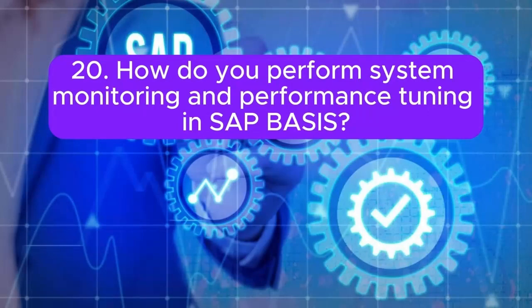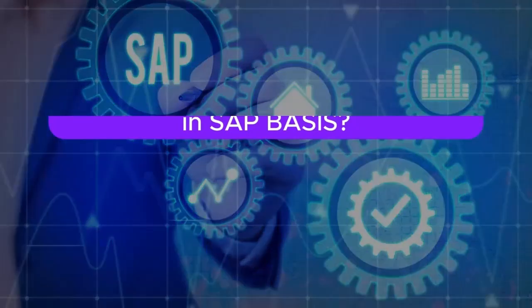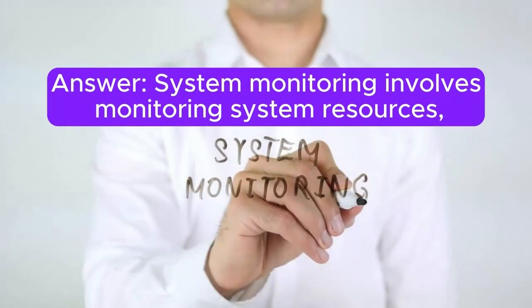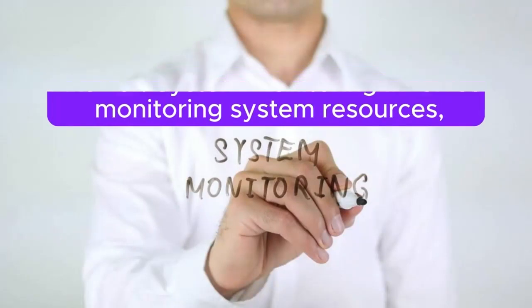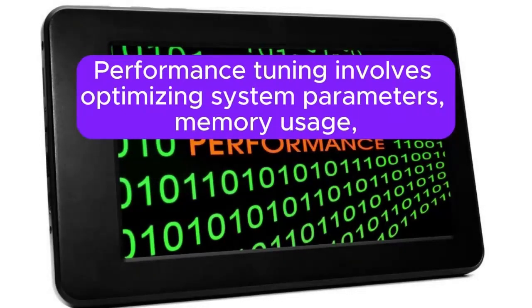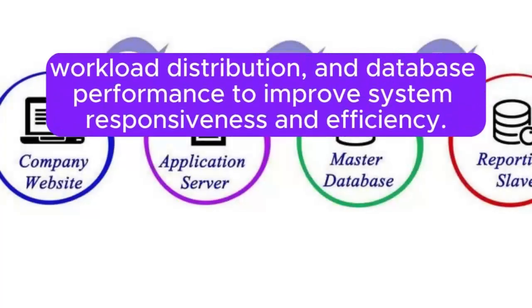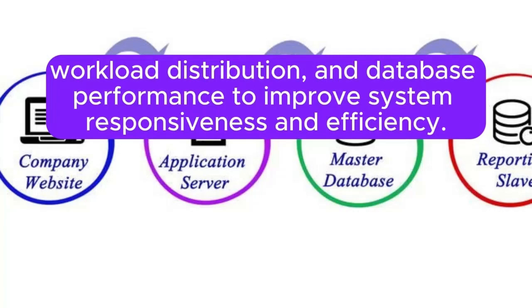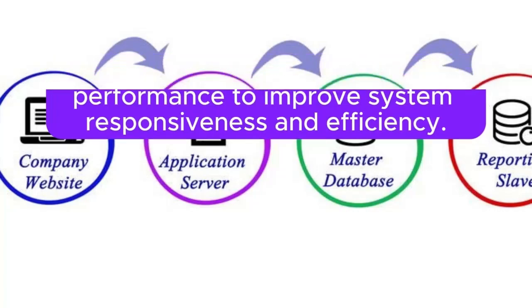Question 20: How do you perform system monitoring and performance tuning in SAP BASIS? System monitoring involves monitoring system resources, performance indicators, and critical metrics using tools like SAP Solution Manager, SAP CCMS, and third-party monitoring tools. Performance tuning involves optimizing system parameters, memory usage, workload distribution, and database performance to improve system responsiveness and efficiency.